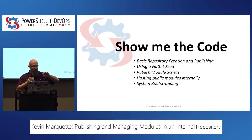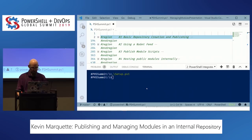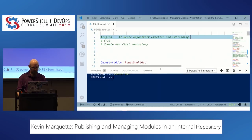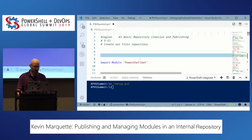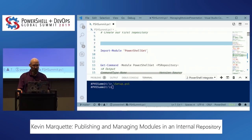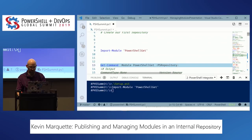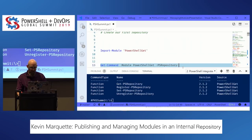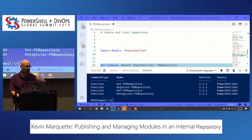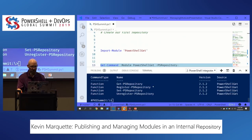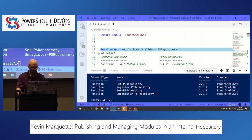I'll also talk about why I take public modules and bring them inside. Everything starts with PowerShellGet — this is the command that has all the functions and features we're going to be working with here. The commands we're really going to look at are the PS repository commands: Get-PSRepository, Register-PSRepository, and a couple others to help with management.